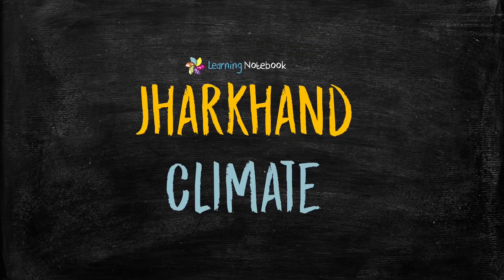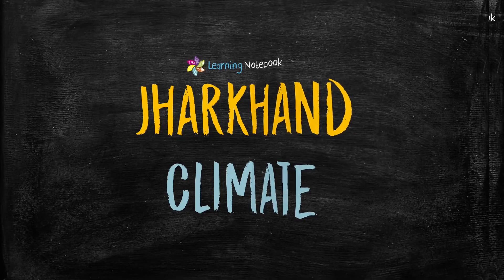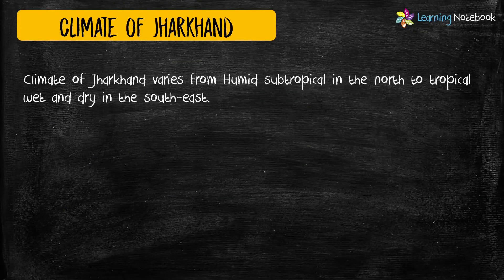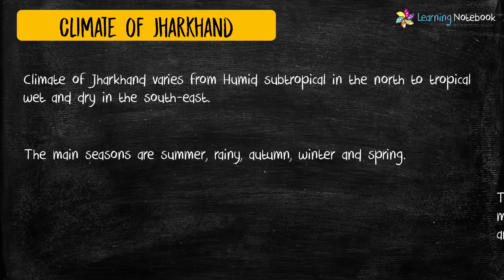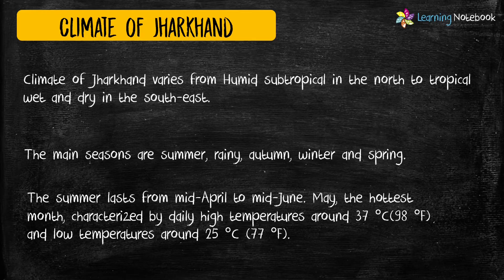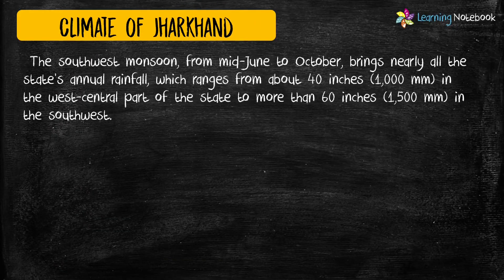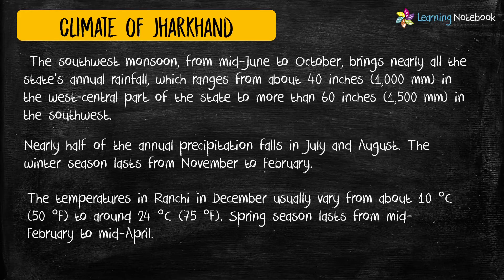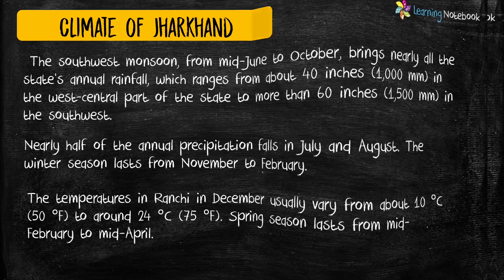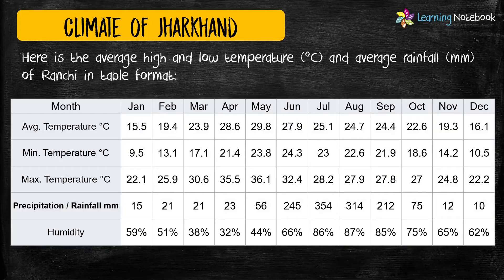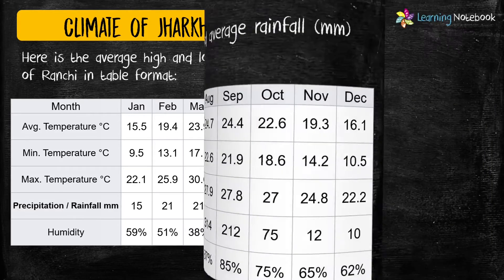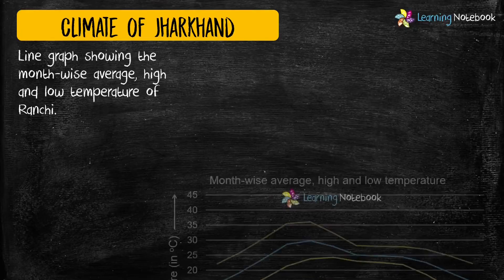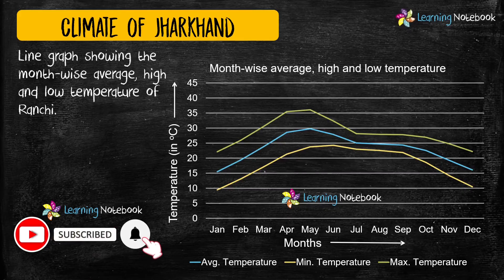Let's see how you can take ideas from the climate of Jharkhand for the Maths Art integrated project. Here we are going to depict the climate of Ranchi, which is the capital of Jharkhand. You can take help of a line graph to show the month-wise average high and low temperature of Ranchi.